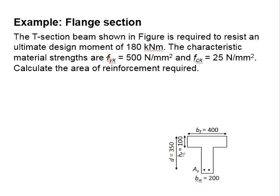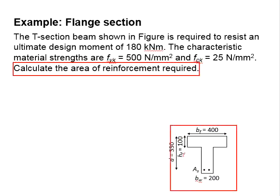The strength of the steel bar is 500 N/mm² and the strength of concrete is 25 N/mm². You are asked to calculate the amount of reinforcement bar required within the section.